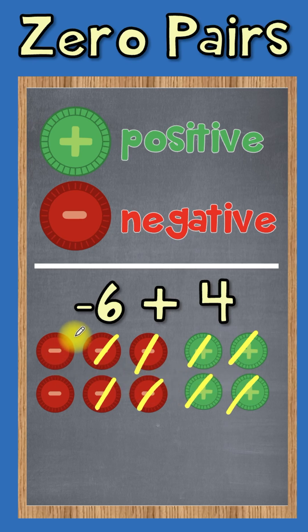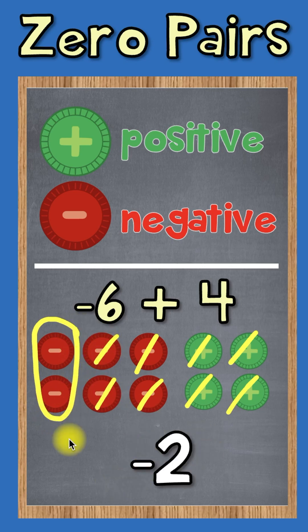And that leaves us with these two red counters here, which means our final answer is negative two.